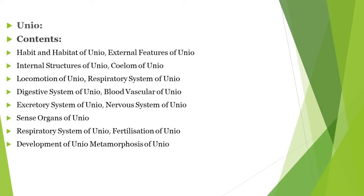We will cover the habitat of Unio, external structure of Unio, then coelom, locomotion, respiratory system, digestive system, blood vascular system, excretory system, nervous system, sense organs of Unio, reproductive system of Unio, and fertilization, development, and metamorphosis. We study all of them in detail.